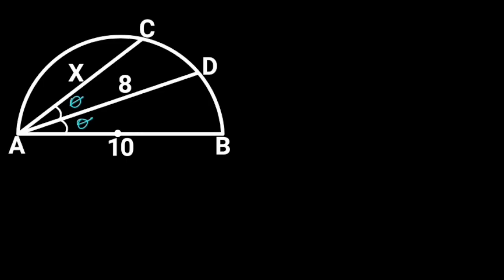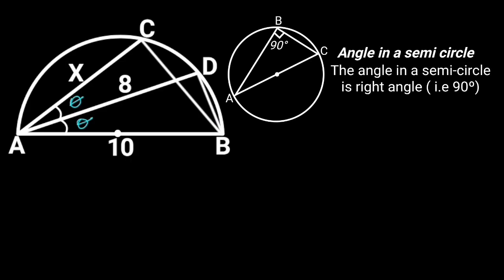Next, let's draw a straight line to join B and D, and another straight line to join C and B. Let's recall the circle theorem of angle in a semicircle, which states that an angle in a semicircle is equal to 90 degrees. From this theorem, observe that angle ACD and angle ADB are angles in a semicircle, so each of those angles is equal to 90 degrees.